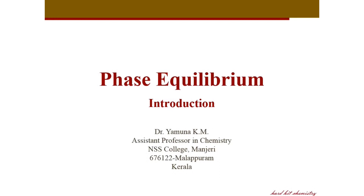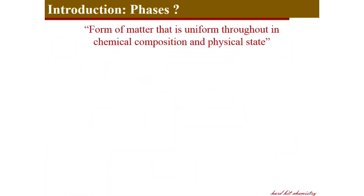We move on to the lecture series. In this part we will see some introductory terms and definitions which help us to understand phase equilibrium in detail. To start with, we will see what is a phase. A phase is a form of matter that is uniform throughout both in terms of chemical composition and in physical state. We will see this definition through some examples.